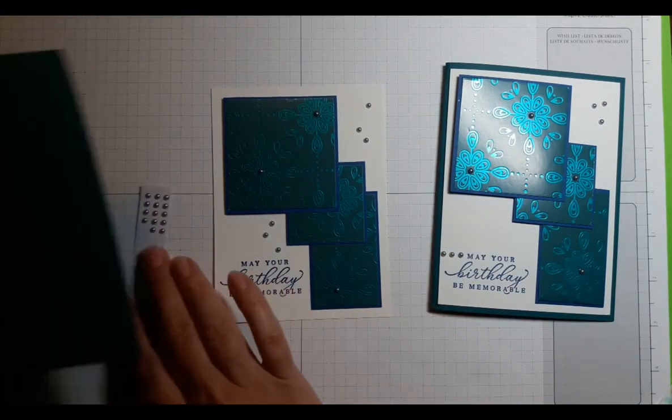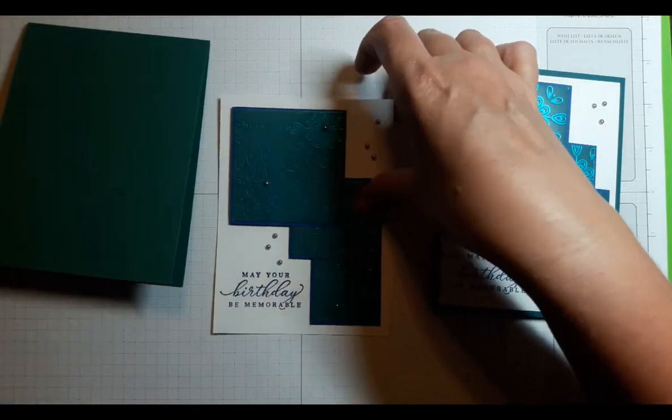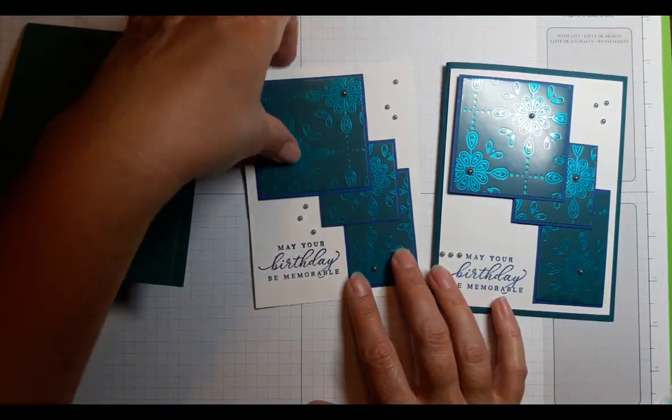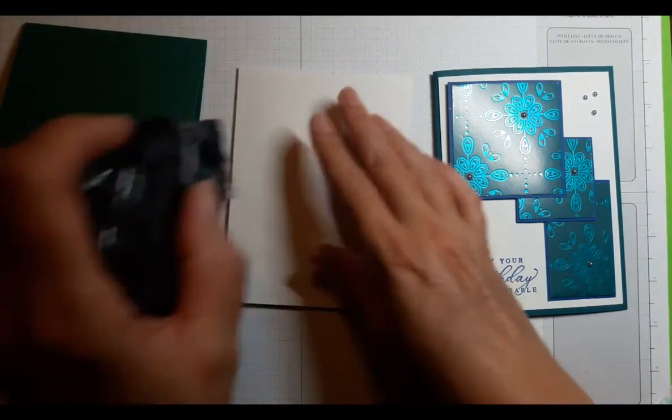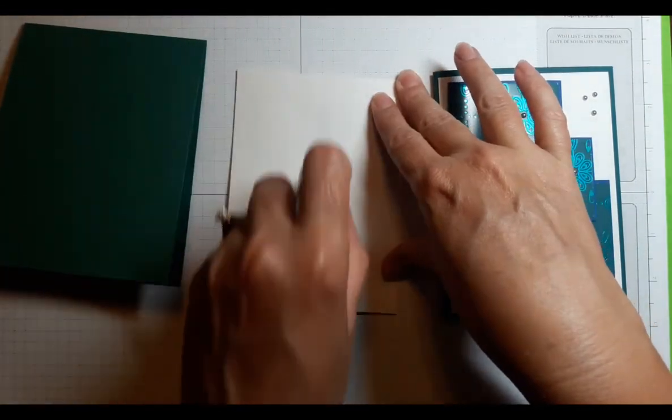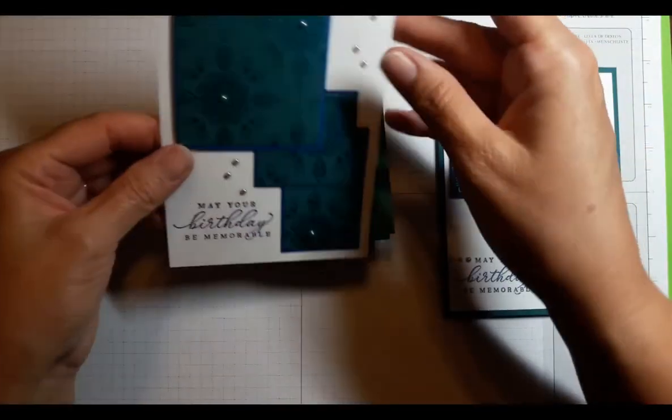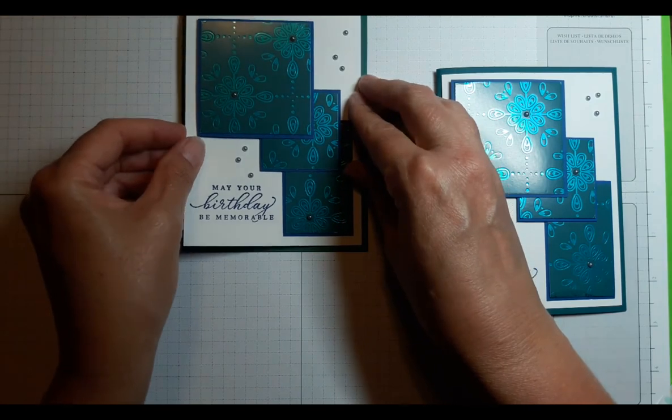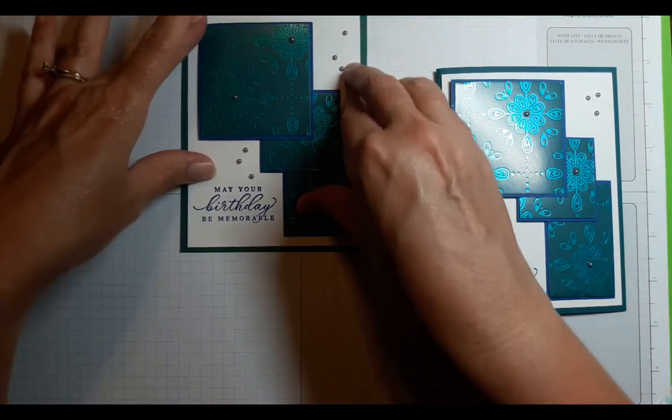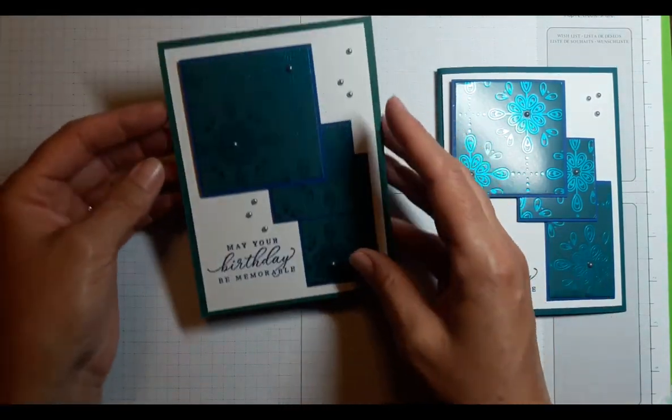And then we're just going to mount it on Pretty Peacock. I've chosen Pretty Peacock cardstock because this specialty paper that I'm using has the Pretty Peacock background. I'll go ahead and put a third strip of adhesive because we do have several layers of this heavy designer series paper on the card. And go ahead and put that up.